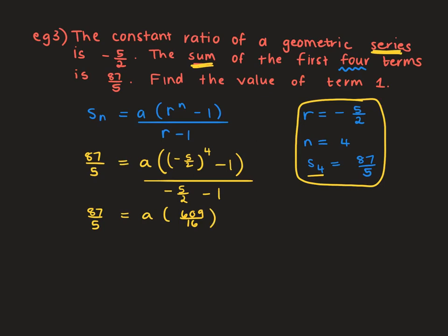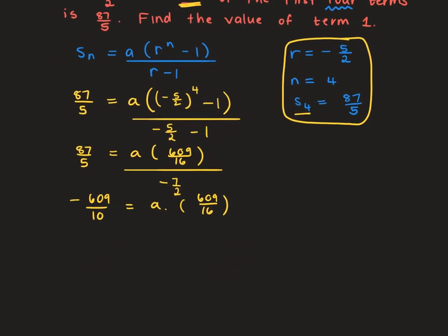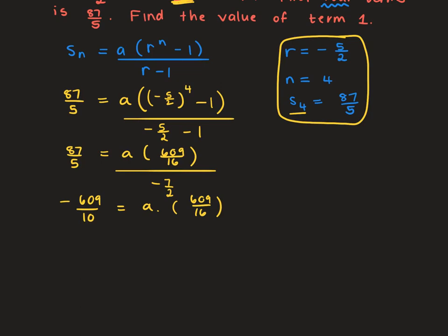We divide by negative 7 over 2. Multiplying 87 over 5 by negative 7 over 2 gives negative 609 over 10, which equals A times 609 over 16. Dividing both sides by 609 over 16, we get that A equals negative 8 over 5. The question asked for the value of term 1, and that's our answer.